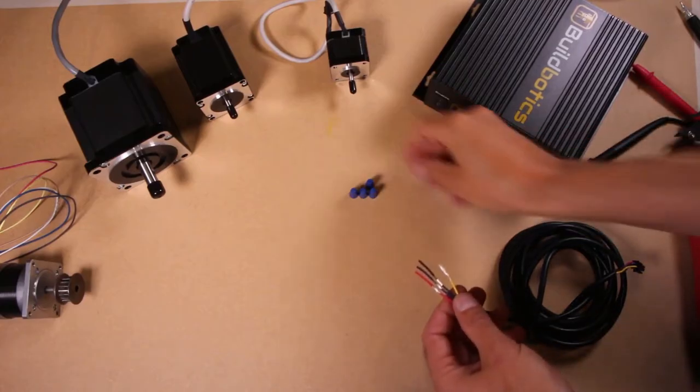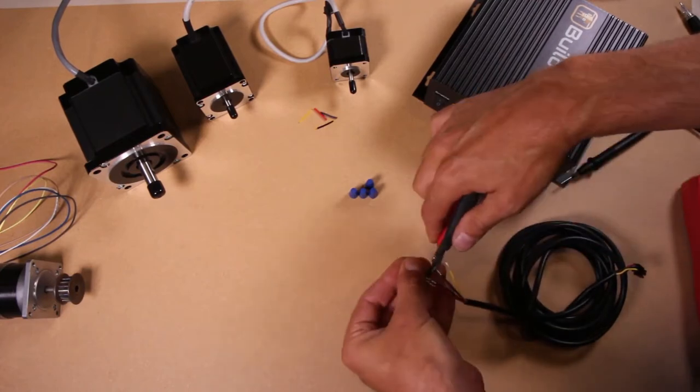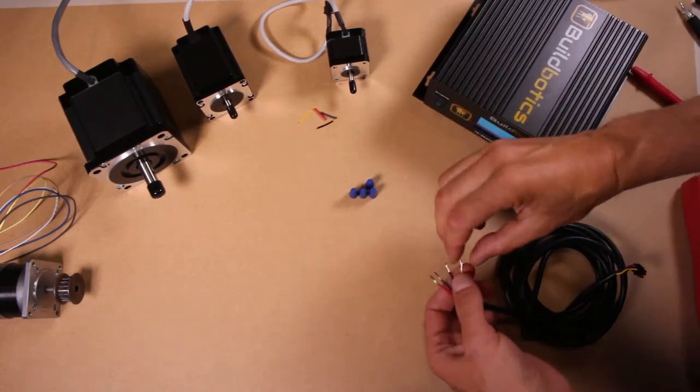The first thing I will do is remove this extra shielding and shorten up the wires a little bit. Then I will twist the end of the wire a little bit.